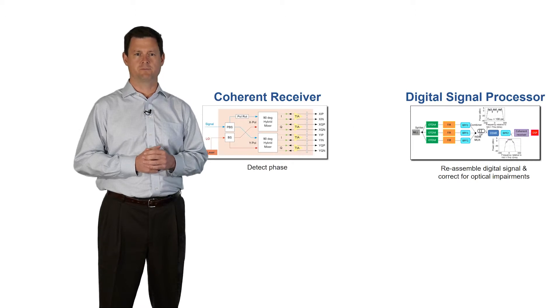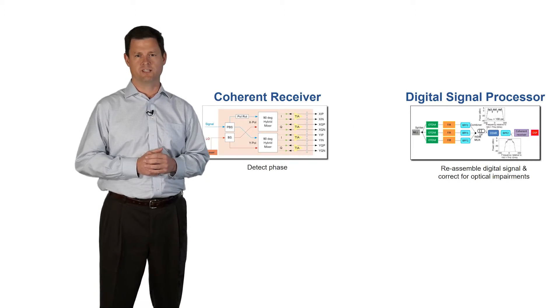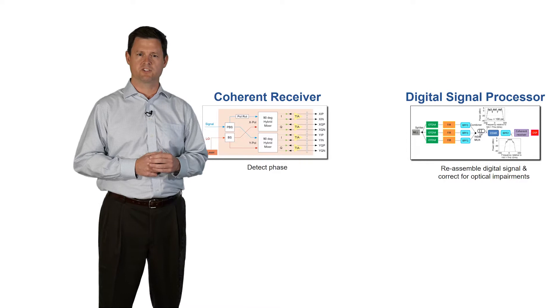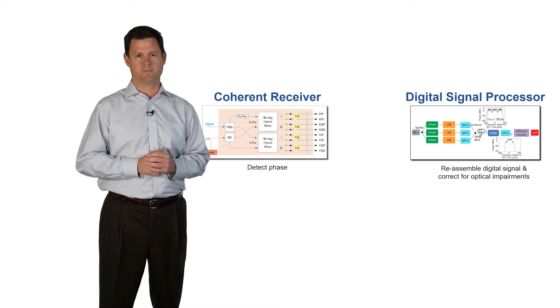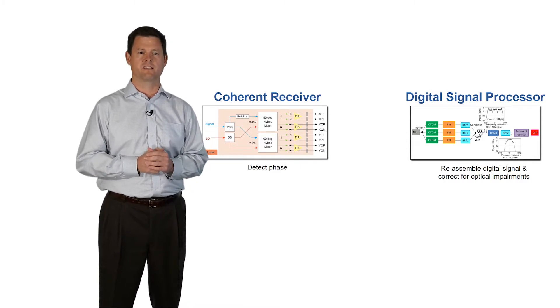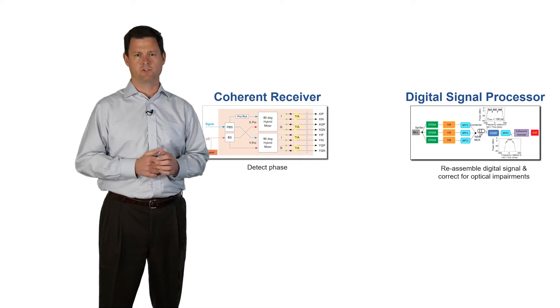Then there was a major shift from direct detect to coherent receivers. These new receivers detected way more aspects of the optical signal, including things like phase, instead of just amplitude or power.